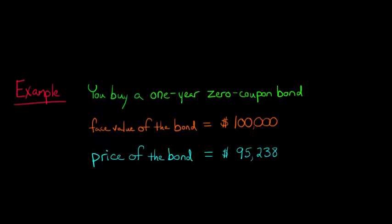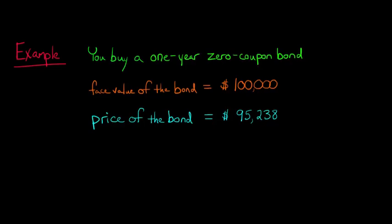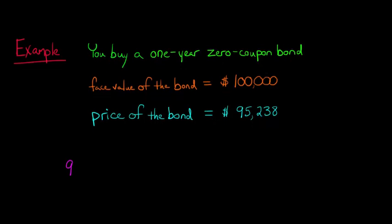We can just use some really simple algebra. For example, if we took our $95,238 that we paid, this is our price. And if we multiply that by 1 plus the yield to maturity, that rate of return, 1 plus the rate of return, times what we've invested, think of the price as our investment.